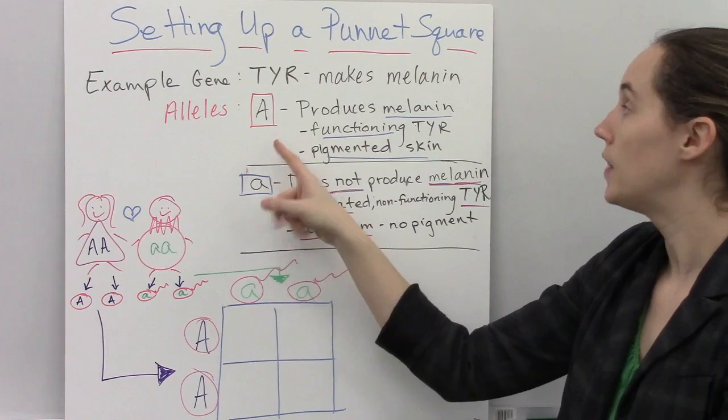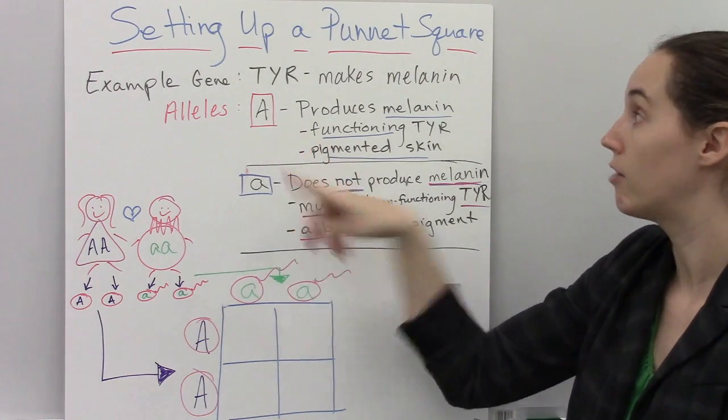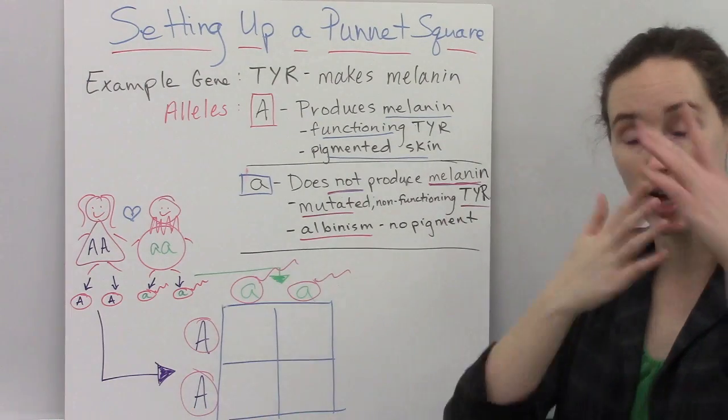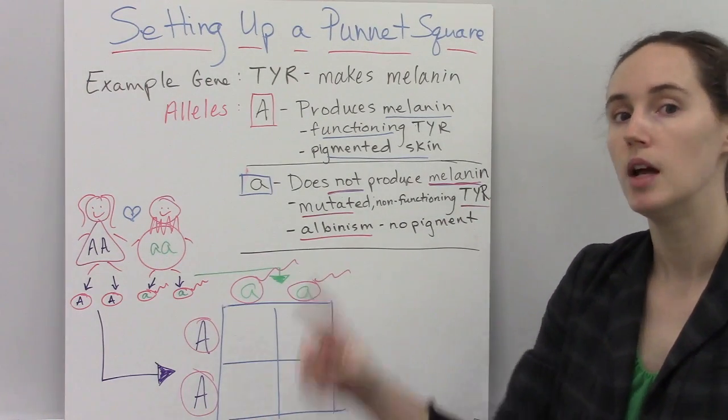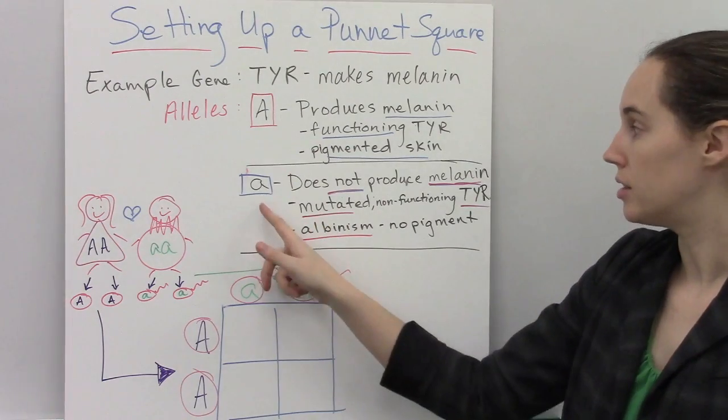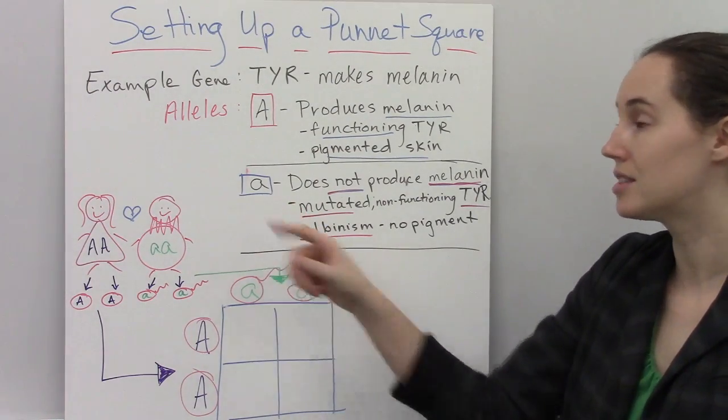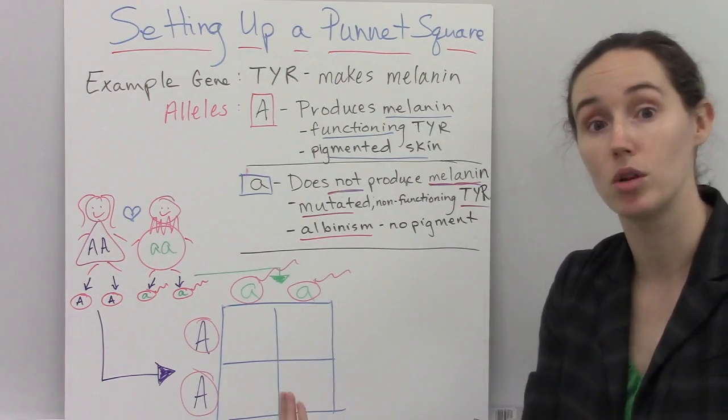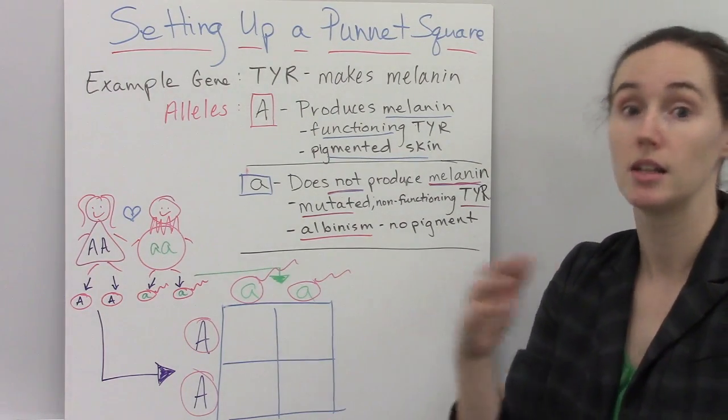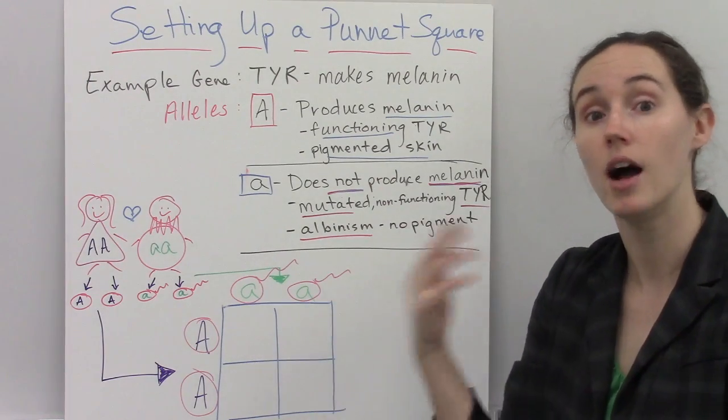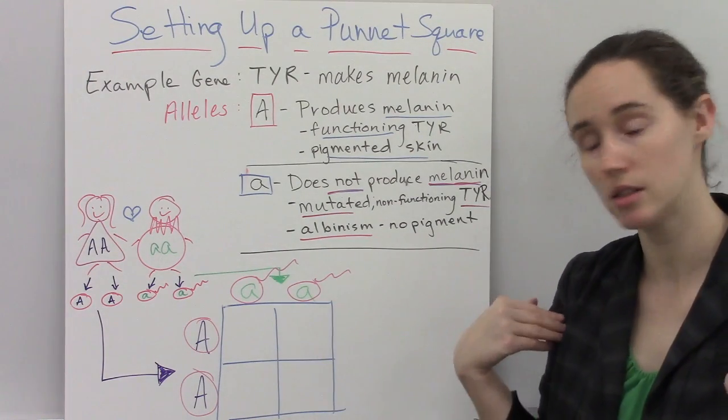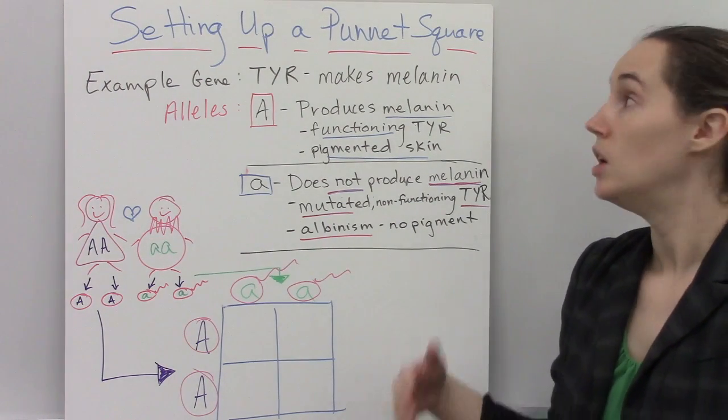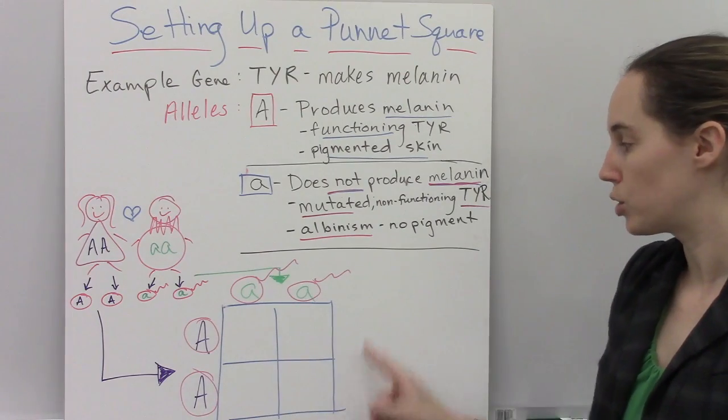So the alleles for that, there's the dominant allele that produces a functioning tyrosinase protein, and when it works it builds melanin and then you have pigmented skin. The other allele for that is recessive, and this is a mutated gene that results in a non-functioning tyrosinase protein, in which case your skin, hair and eyes cannot make melanin, and therefore you don't have pigmented skin. So in this example, we first have to set up that tool.